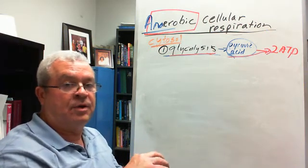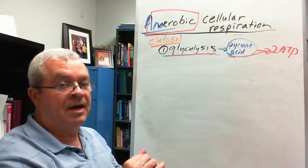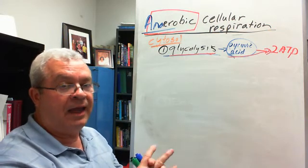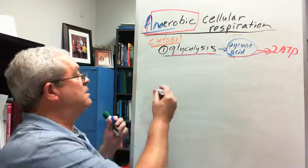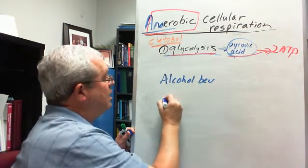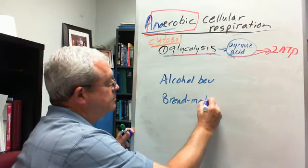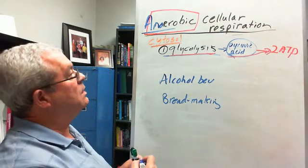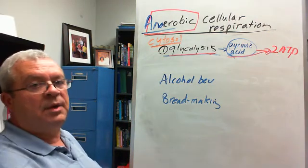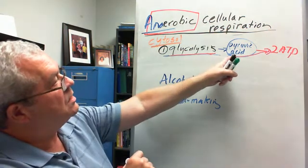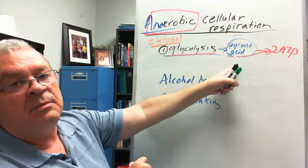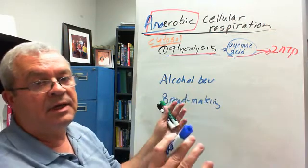Let's think of those two major human industries in which yeast are deprived of oxygen. What are they? Well, I think they're alcoholic beverage and bread making or baking. And so we've got alcoholic beverage and we've got bread making. What's the deal with that? Well, yeast being deprived of oxygen still do glycolysis. They still produce pyruvic acid, but that pyruvic acid is not taken into the mitochondria because the mitochondria basically is shut down due to lack of oxygen.